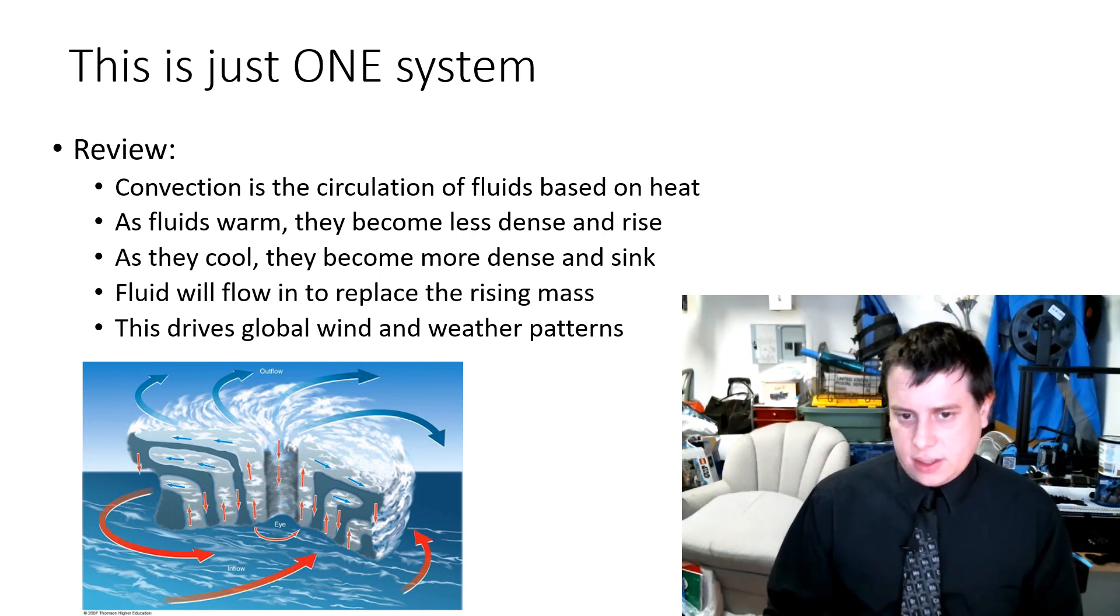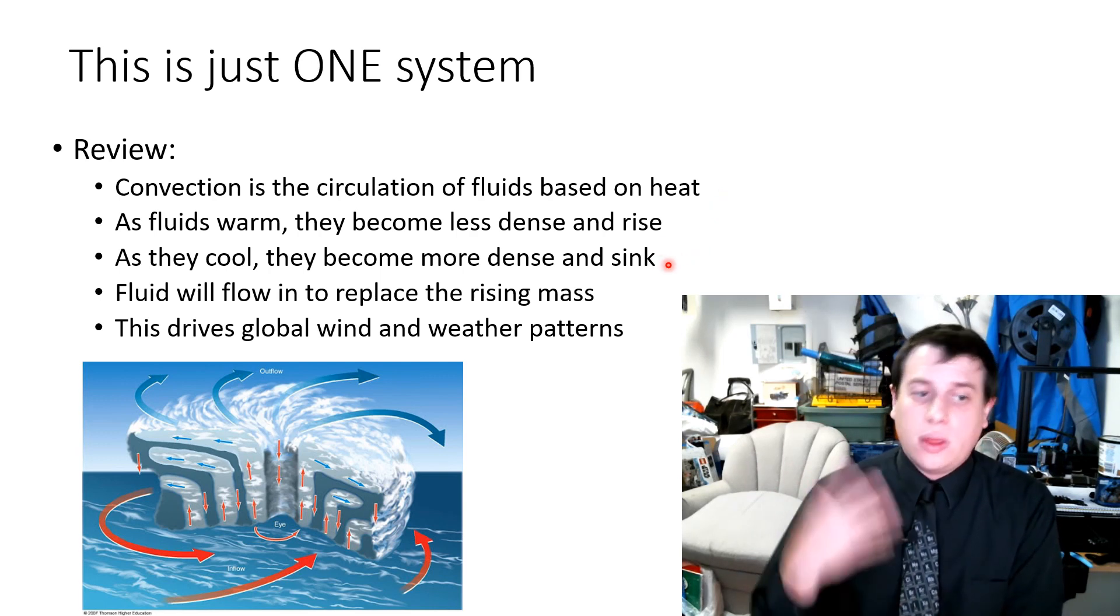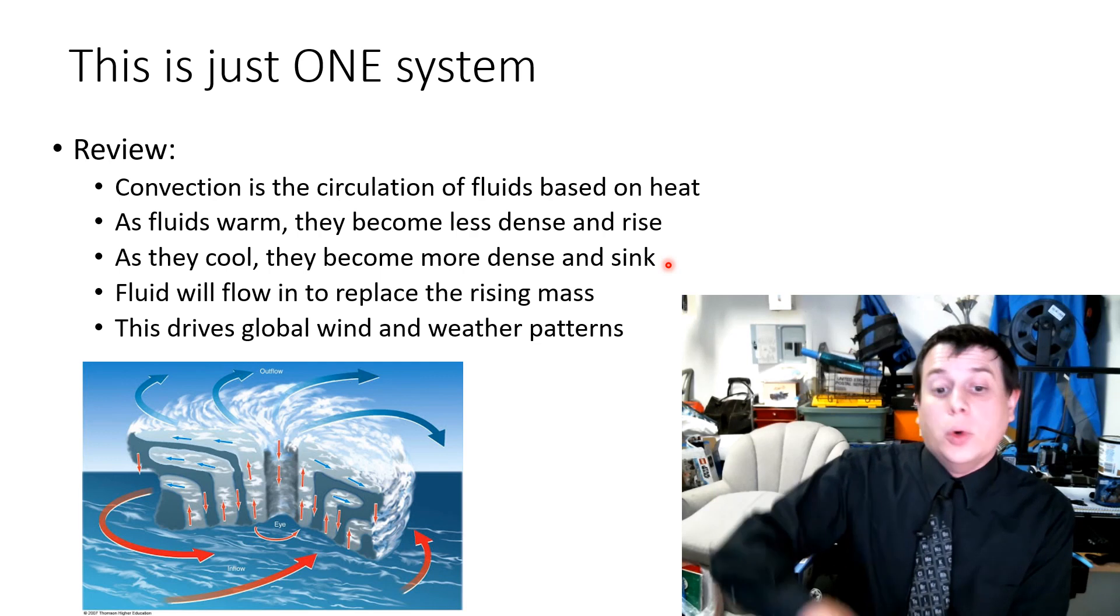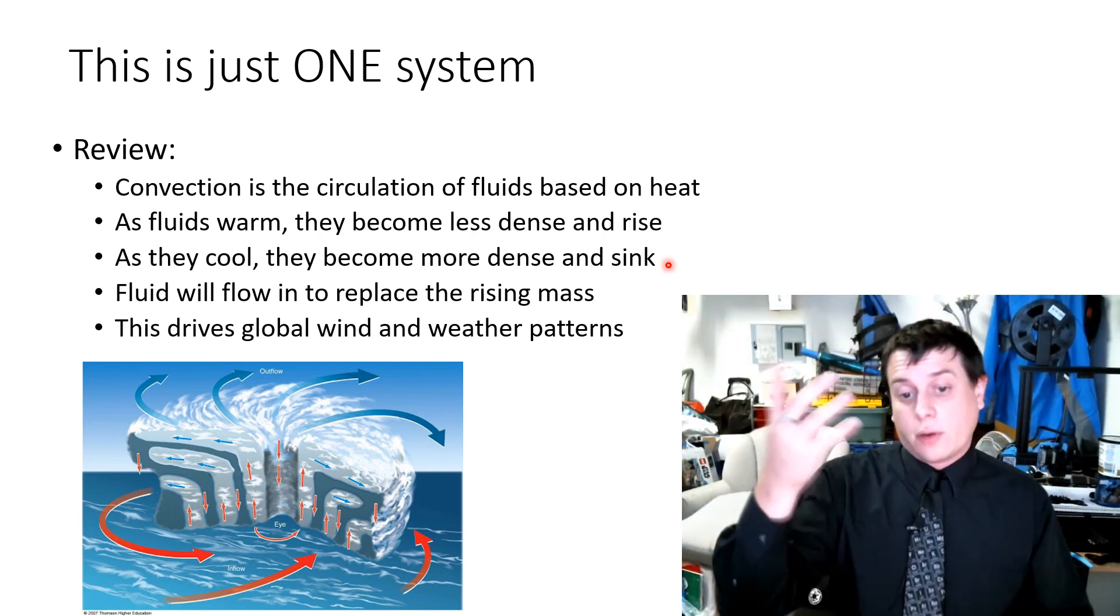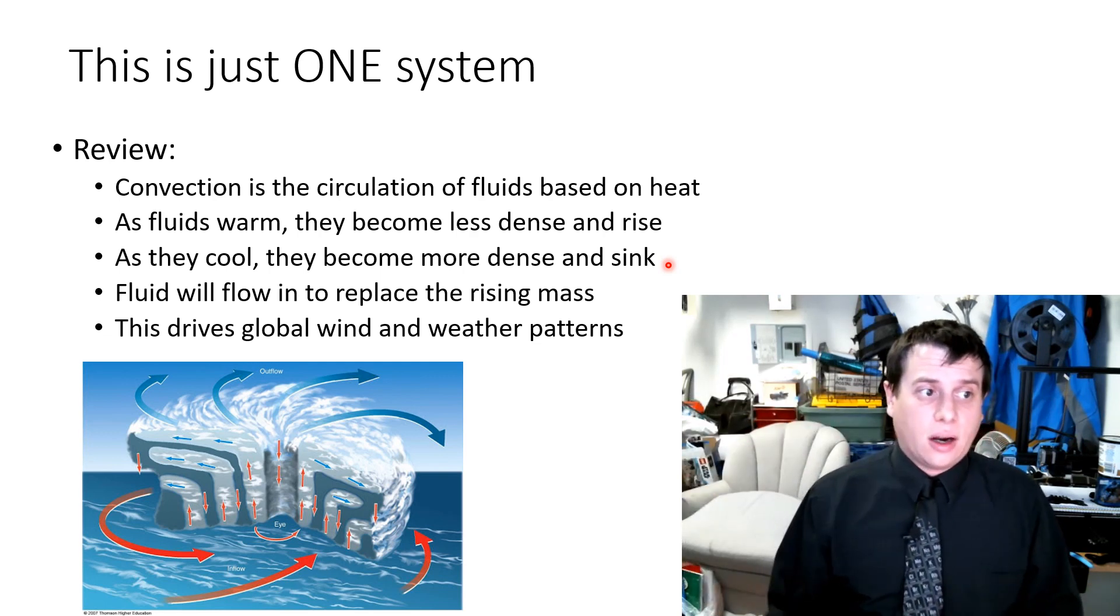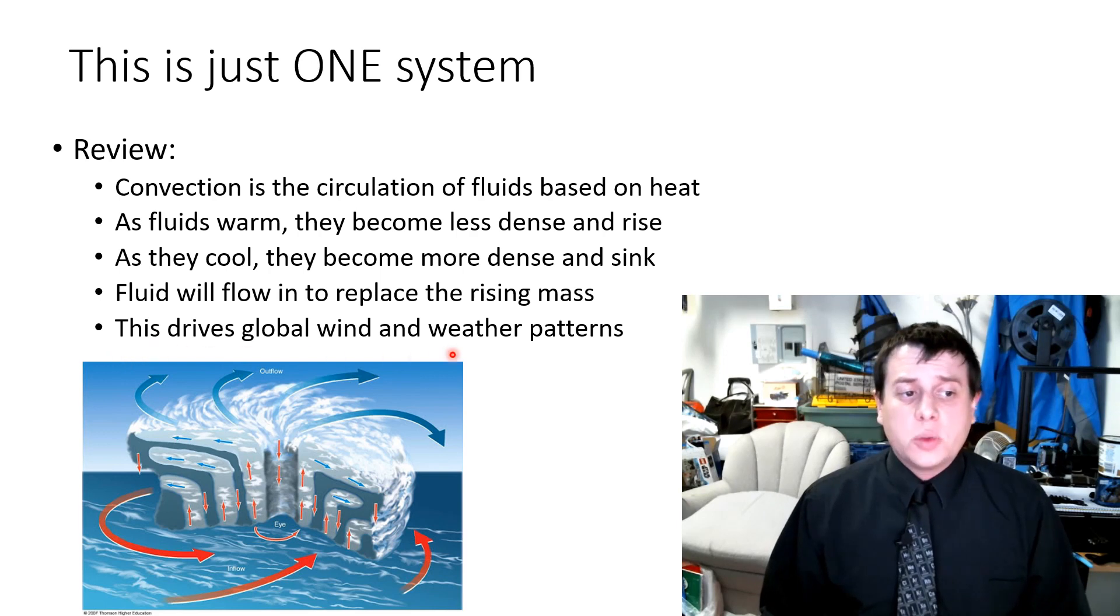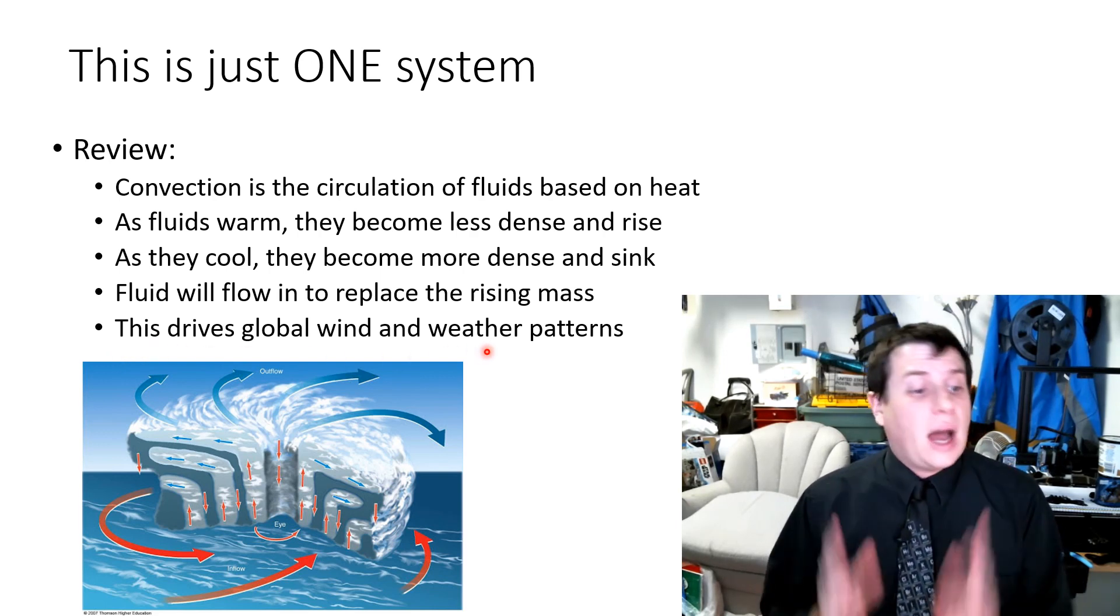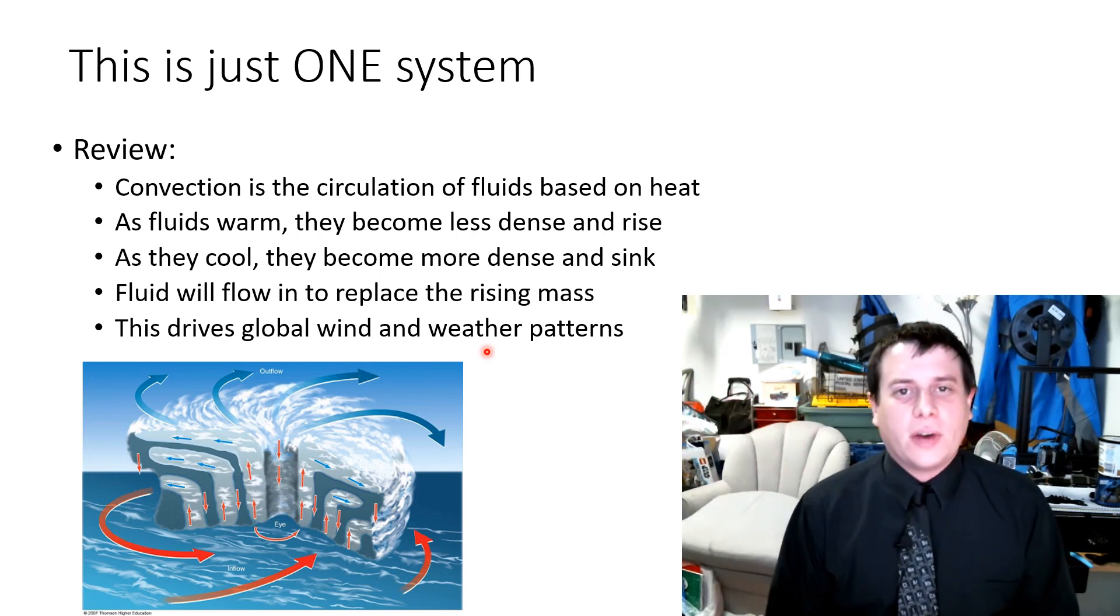Just to review, this is only one system. Convection is the circulation of fluids based on heat. As they warm up, they will rise. As they cool, they will sink. As any fluid moves out because of it rising or falling, other fluid will rush in to replace it. So hot air rising, you'll get ground level winds coming in to replace it. Cold air descending, you'll have high altitude jet streams coming in to replace it. Fluid will always flow to replace the rising or falling mass. And this will drive global wind and weather patterns. I'm going to go ahead and stop there. What we need to make sure that we are clear on is how convection works because next when we come back, I'm going to start talking about the atmosphere, its structure, its layers and how it moves around our planet. That's all for today, guys. Take care, have a great day and I'll see you next time.